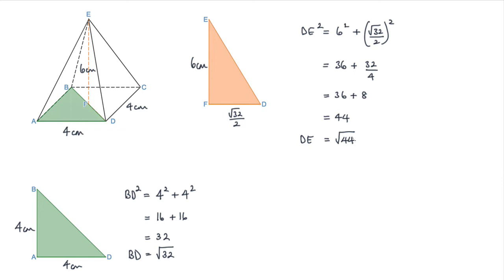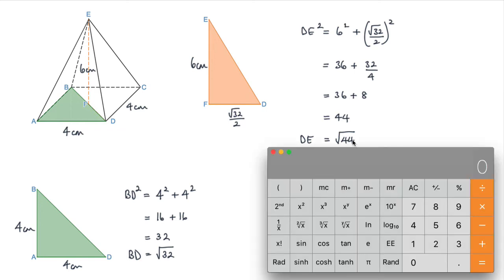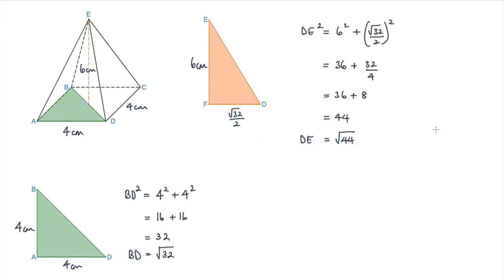If we open the calculator, we can see that the square root of 44 is 6.63 centimeters to two decimal places. So 6.63 centimeters, to 2 DP.